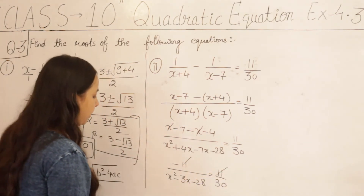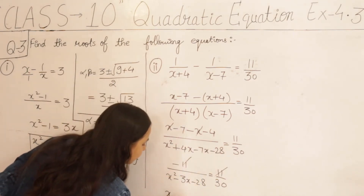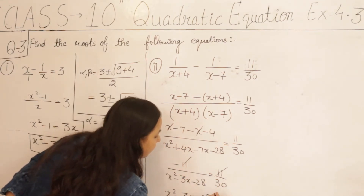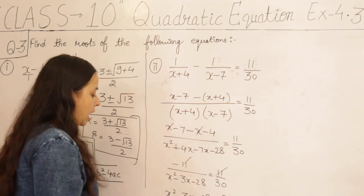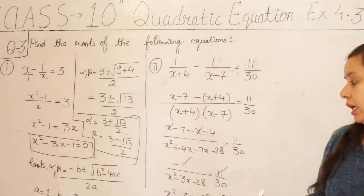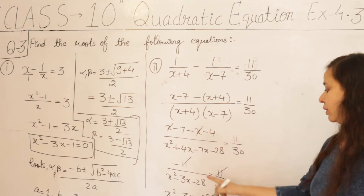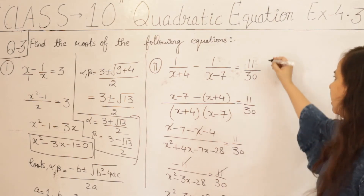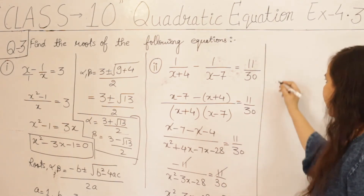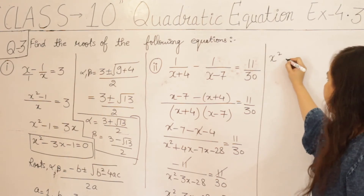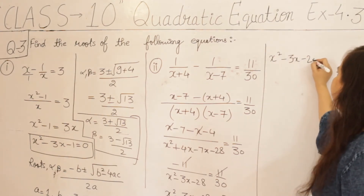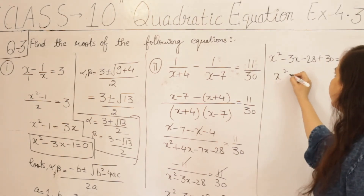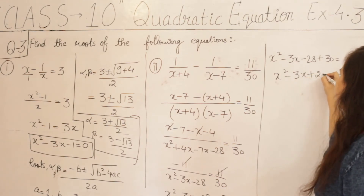We can cancel out the 11 on both sides and then cross multiply, giving us x squared minus 3x minus 28 equals minus 30. Transposing minus 30 to the left side: x squared minus 3x minus 28 plus 30 equals 0, which gives us x squared minus 3x plus 2 equals 0. This is our quadratic equation.